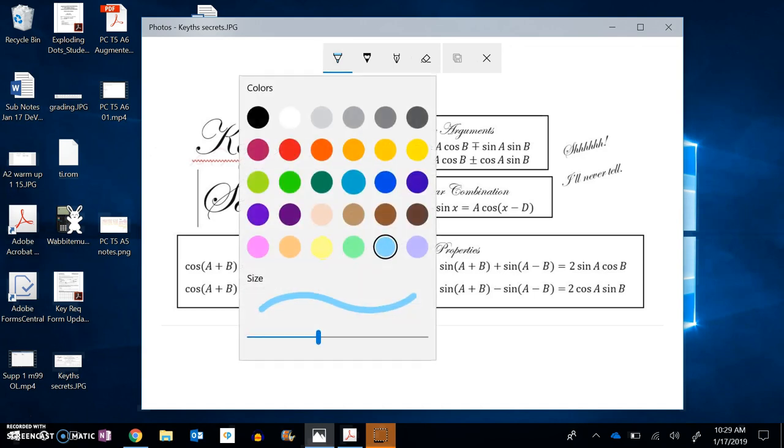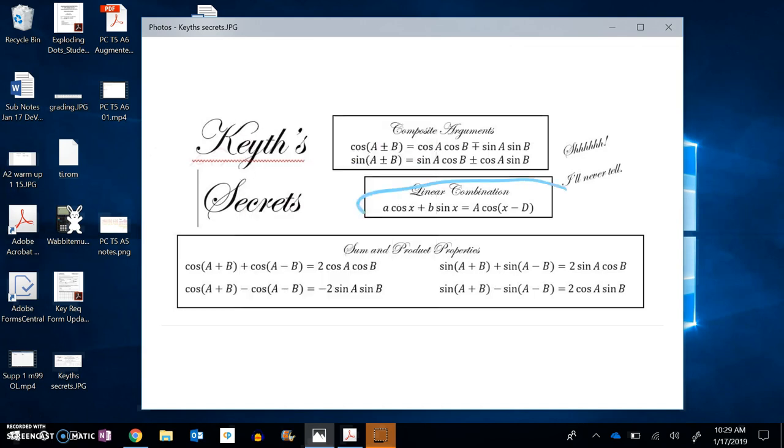So if I peek back here at Keith, Keith is telling me there's my linear combination. So I just have to find A. I have to find D. Remember, I can get A off the Pythagorean Theorem. I can get D off the angle that's made of the triangle using inverse tangent.